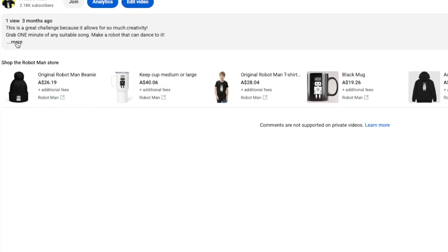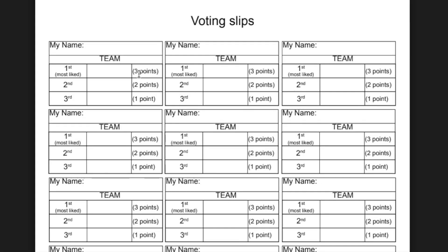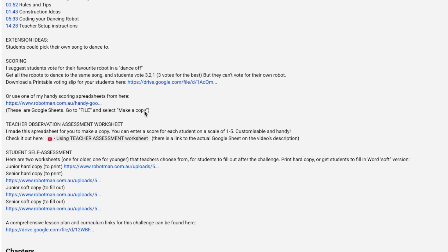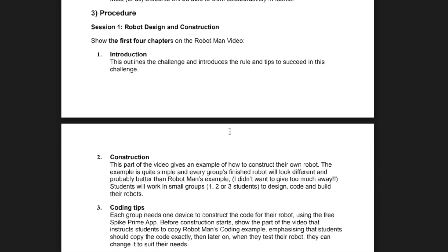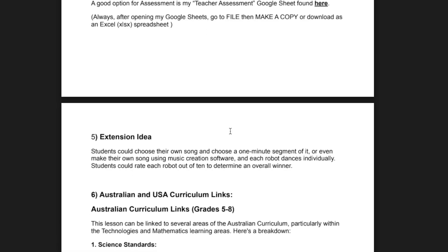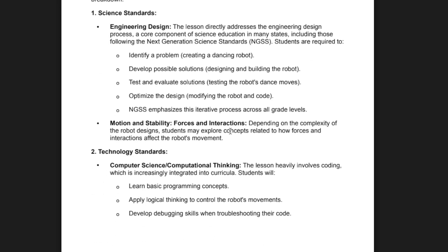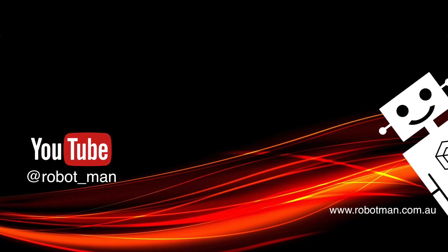Down in the description of all my lesson videos, there are some free resources. In this one, there's a link to a printable PDF that kids can use to vote for the best dancer — they fill out their name, write the names of the three robots or students they like best, and then you tally up all the votes. Also at the bottom of all my lessons there's a comprehensive lesson plan with objectives, materials needed, procedure, extension ideas, and links to the Australian and American curriculum. If you like this video, make sure you check out my other lessons.